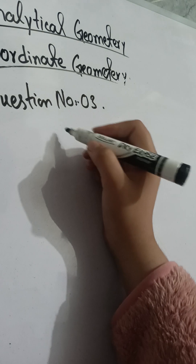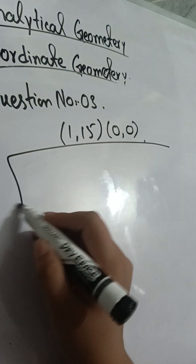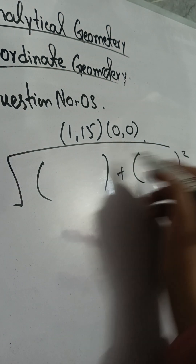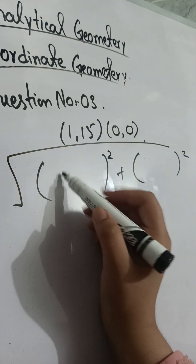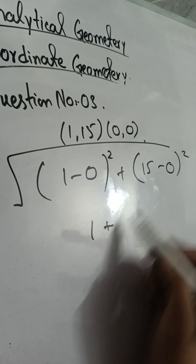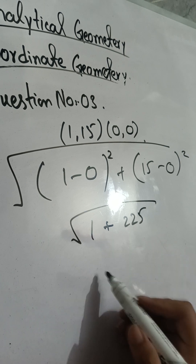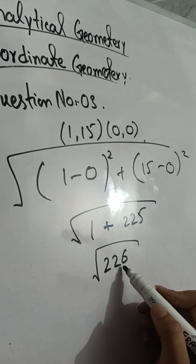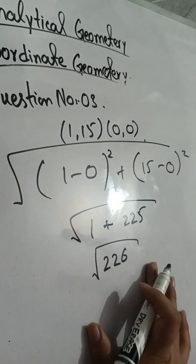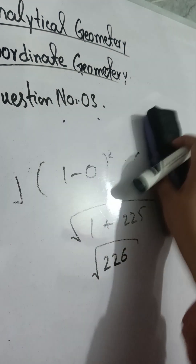Now let's go to question number three, part three. For these points as well, when we calculate the distance, the result shows these points are not at the distance of 15 from the origin.